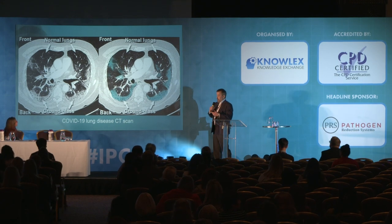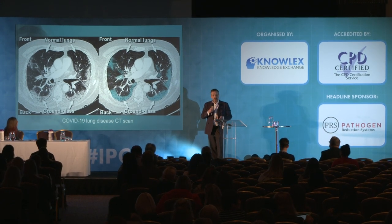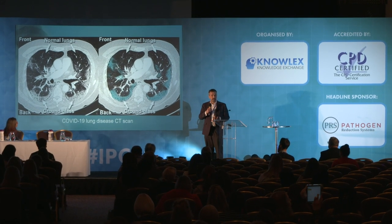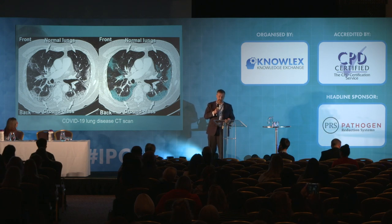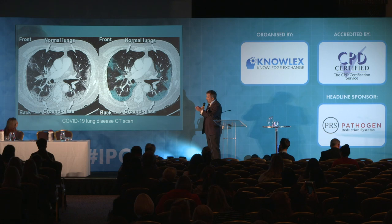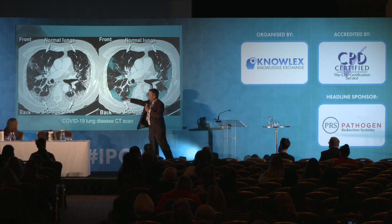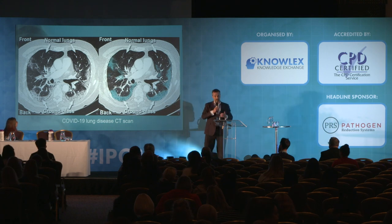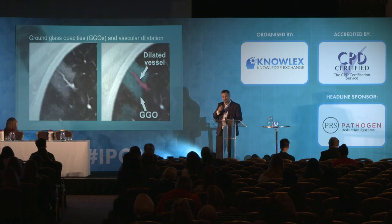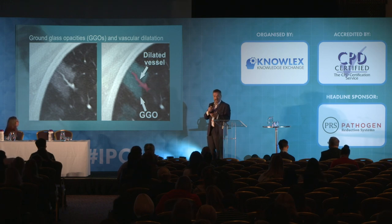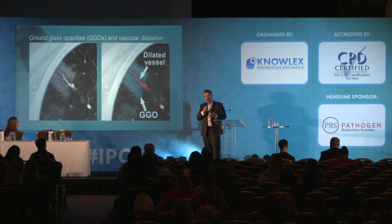The ground glass shadowing was thought in the early days to be a key feature of the lung disease, but actually it's a non-specific descriptive term used in the context of many lung diseases. What I'd like to draw your attention to is the distribution of this disease — it's the back and the edges of the lungs that are dominantly affected. You can see here that there are dilated blood vessels supplying those areas of abnormality, and in fact it's these dilated blood vessels — dilated arteries and veins — which are the hallmark feature of COVID.